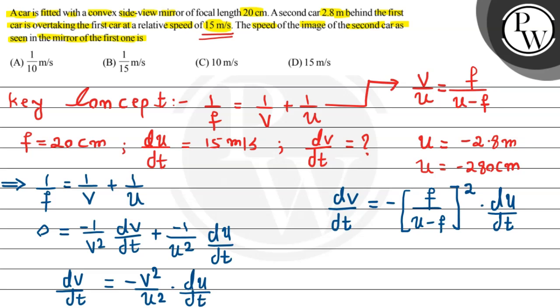Now, we have all the values given. Simply we will substitute the values. So dv/dt will be equal to minus sign. Now, focal length is 20 centimeter divided by u which is minus 280 minus 20. That whole square multiply by du/dt which is given as 15 meter per second.